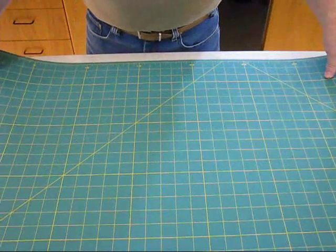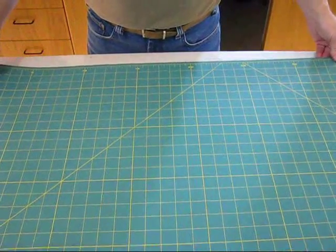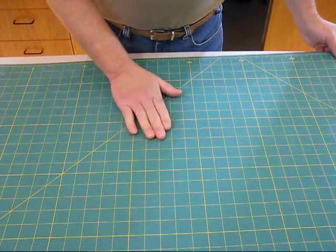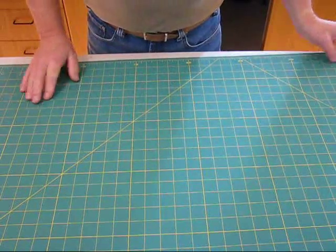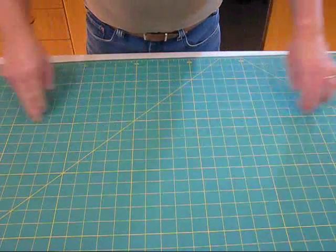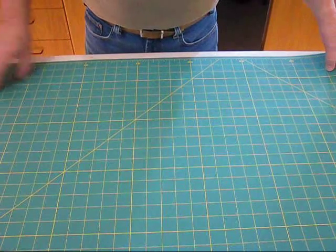You need to have a nice work surface. This is a roller cutter mat that has a grid pattern on it. You don't need to have it, but it's nice to help line up edges and to cut against.